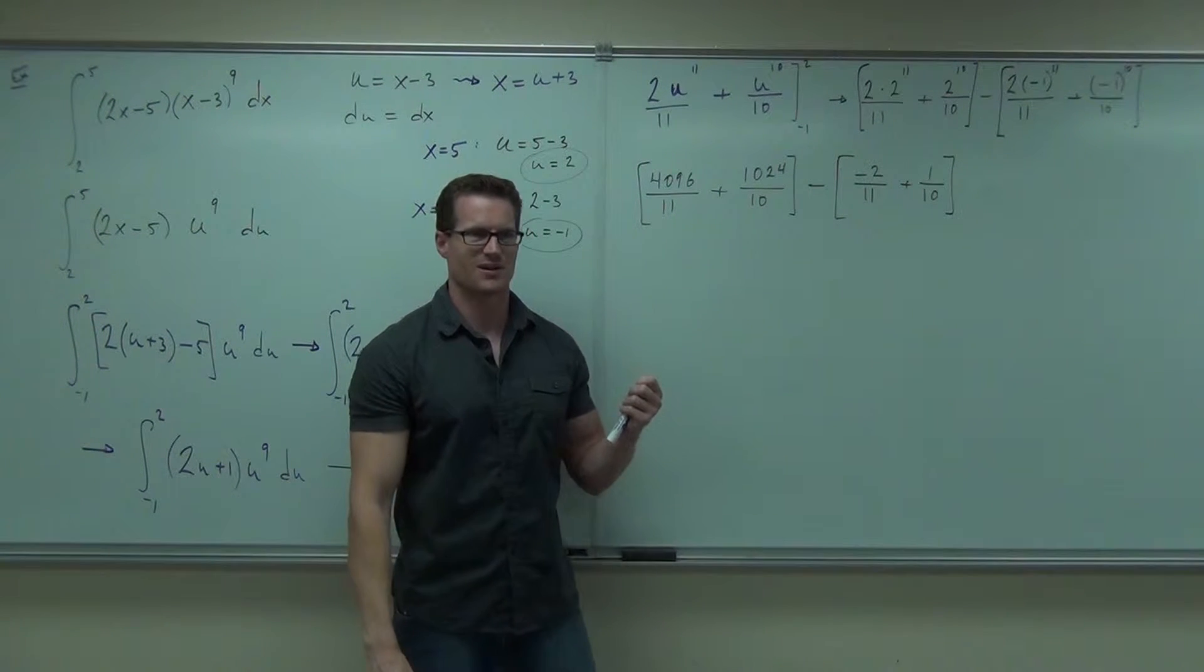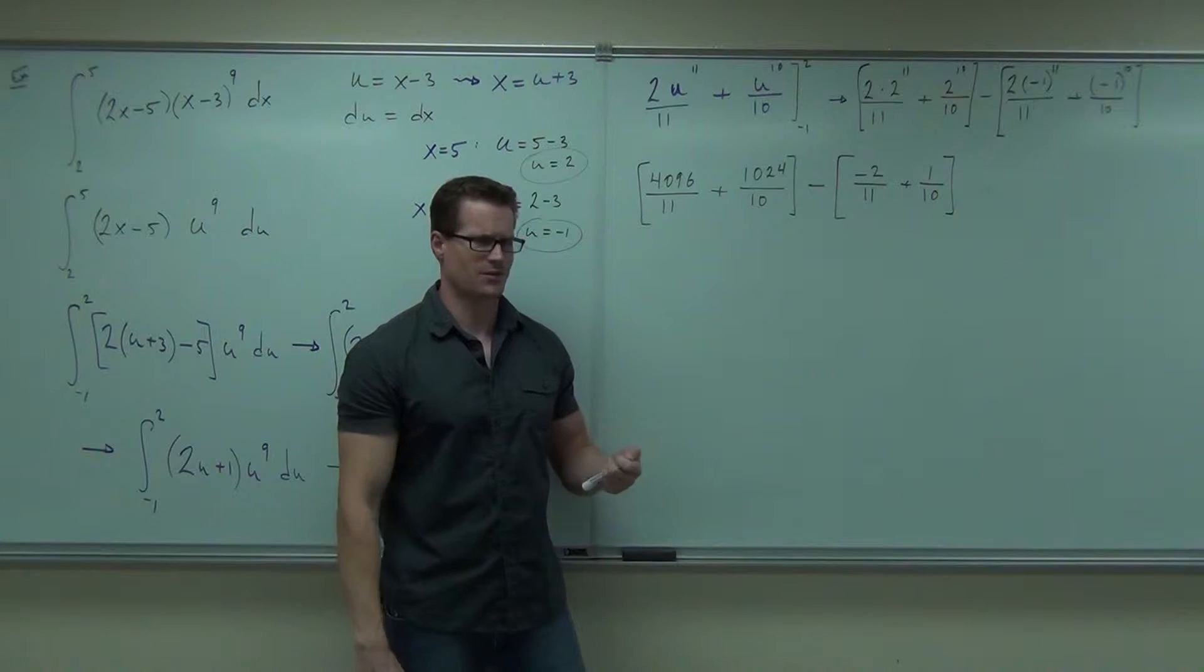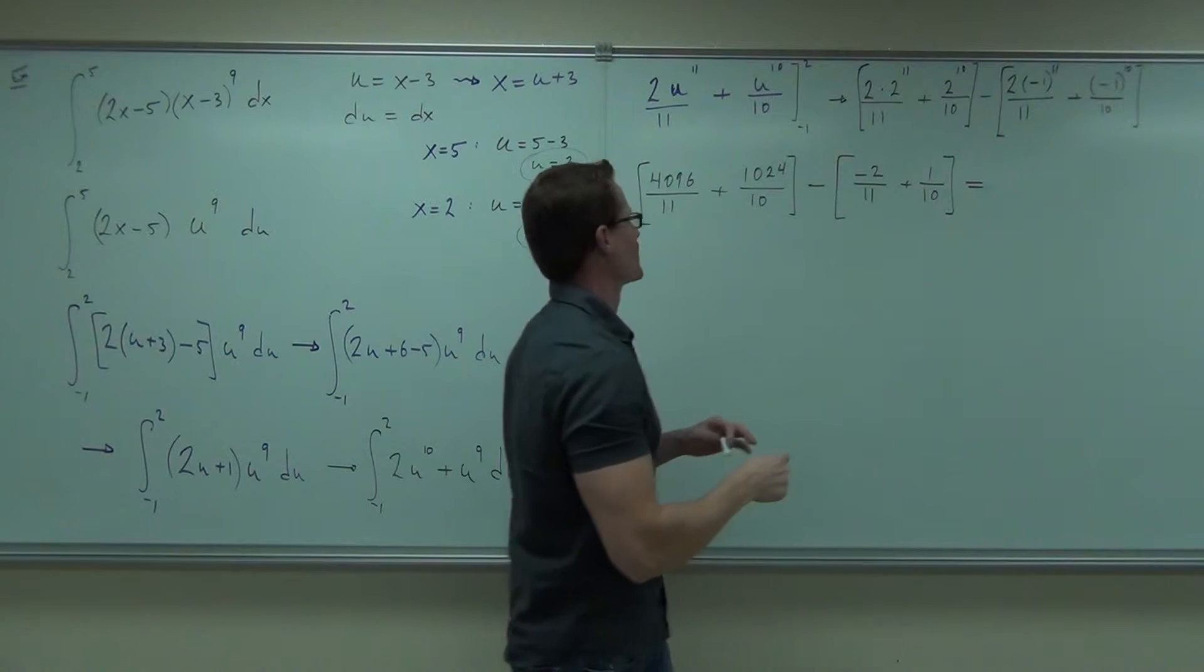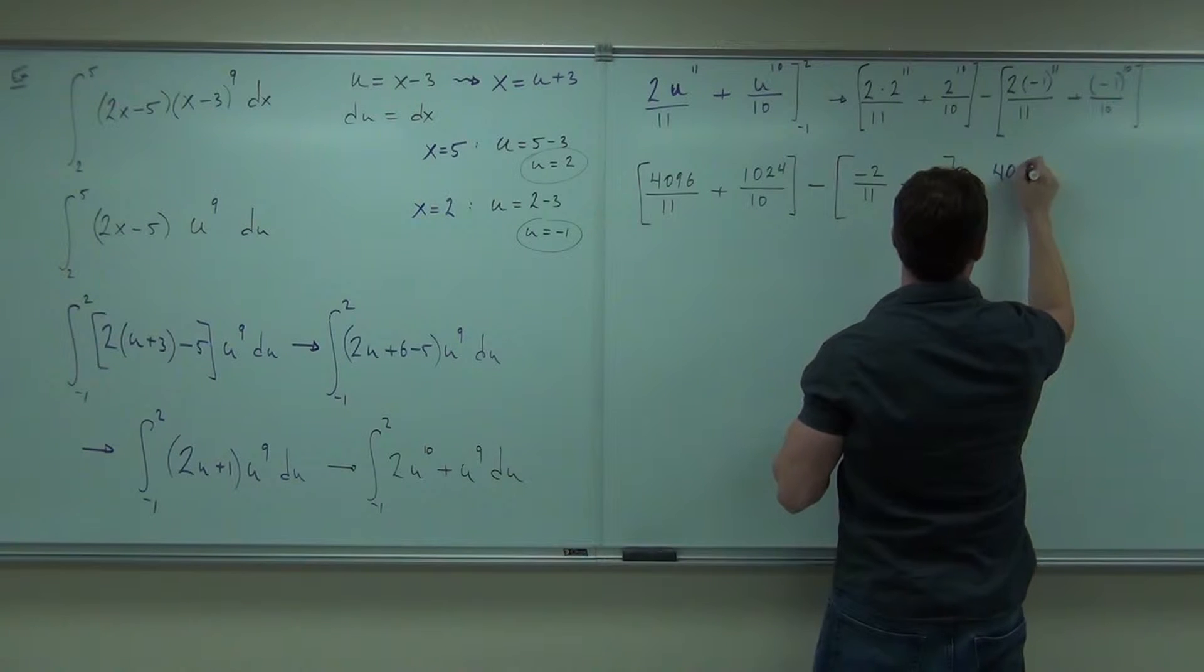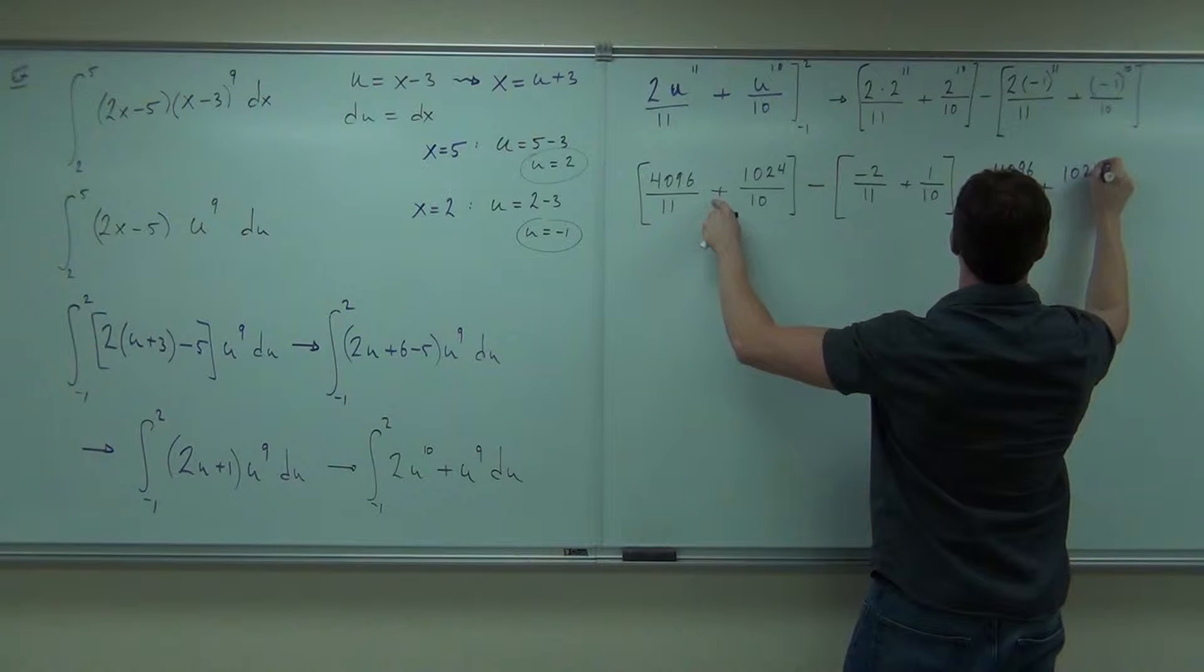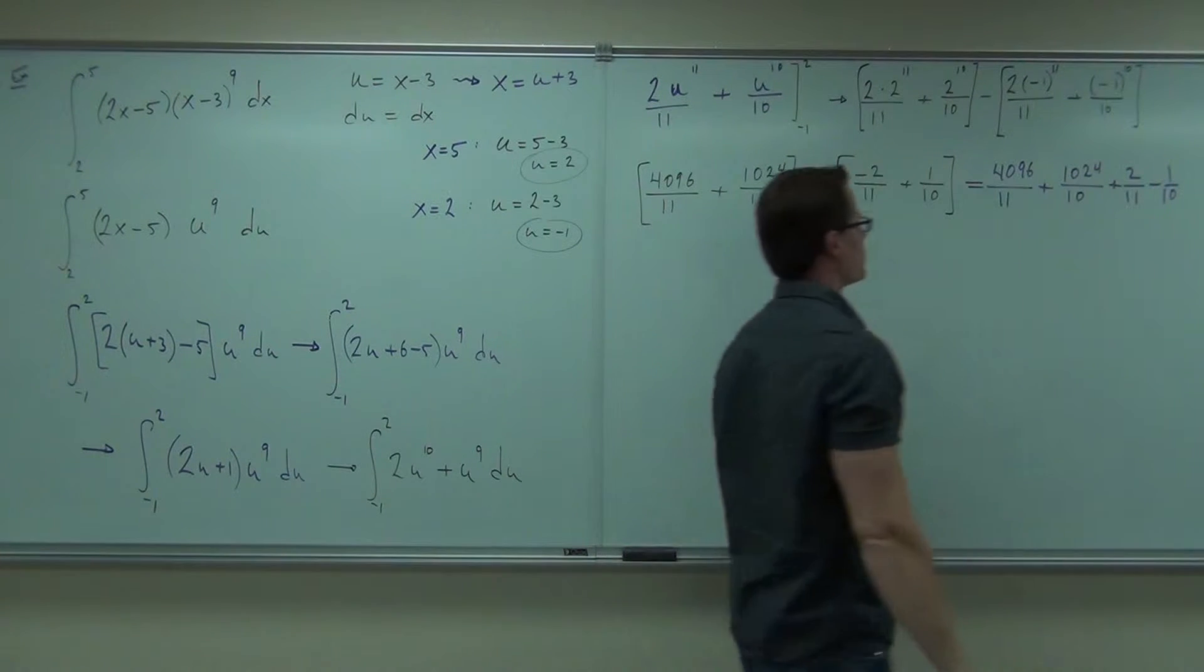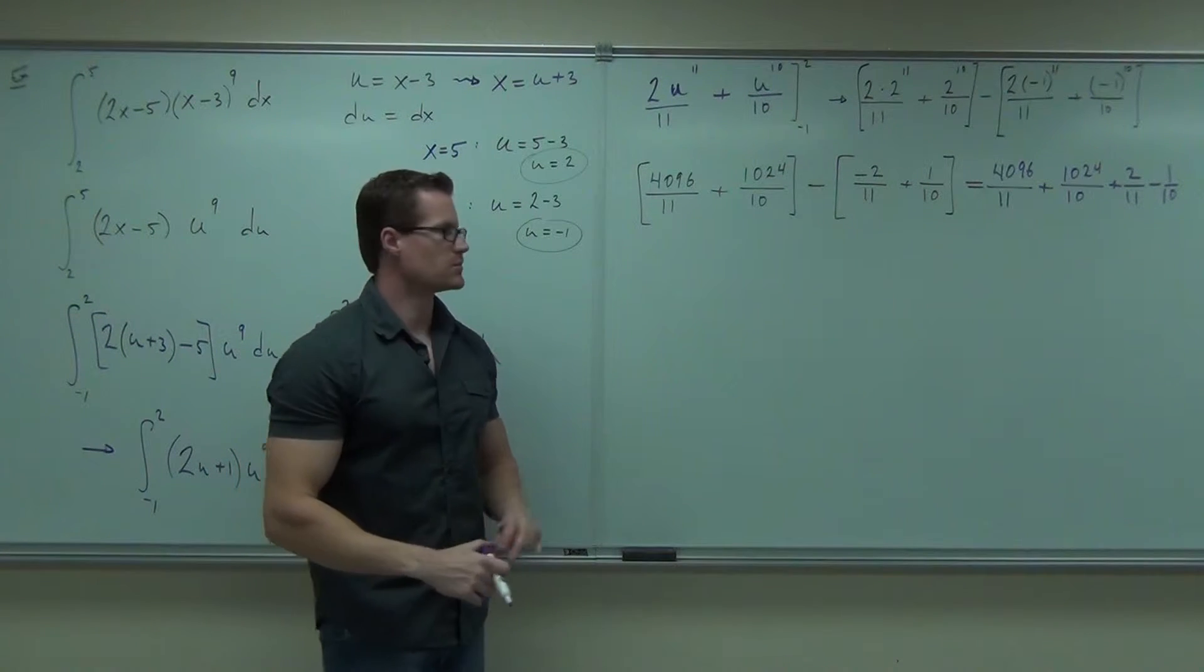Fractions. Obviously. Fraction Friday. Okay. So we've got 4096 over 11, plus 1024 over 10, plus 2/11ths, minus 1/10. So far, we're good on sign changes? All right.